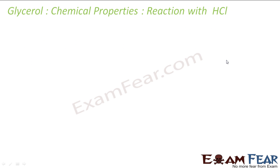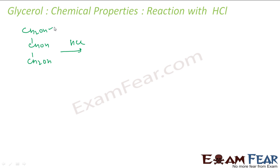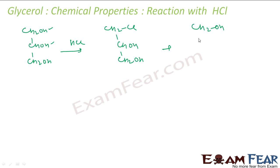Reaction with HCl: there is a small difference here. Glycerol (CH₂OH, CHOH, CH₂OH) reacts with HCl and gives a mixture of products. In one case the terminal OH is replaced by Cl, giving CH₂Cl; in another case the middle OH is replaced. So a mixture of mono-chloro products is obtained.